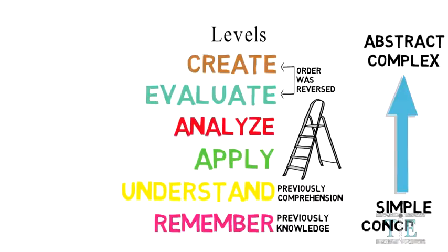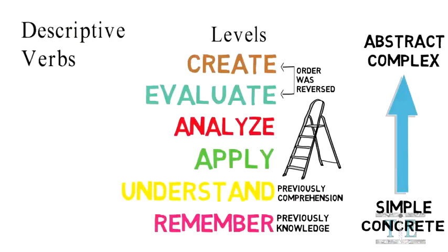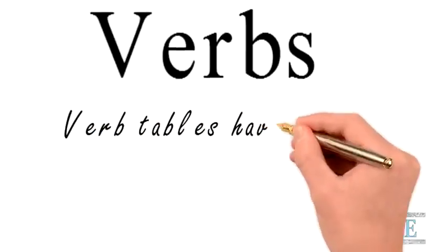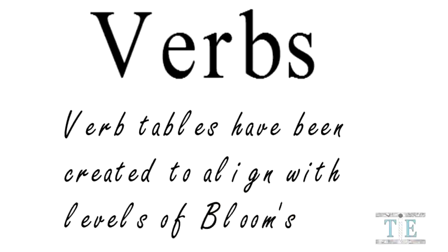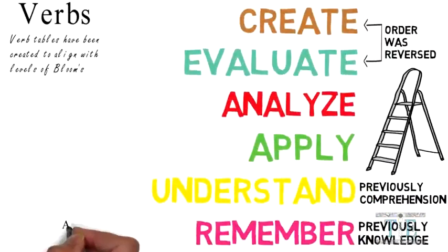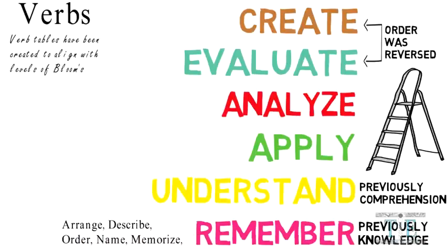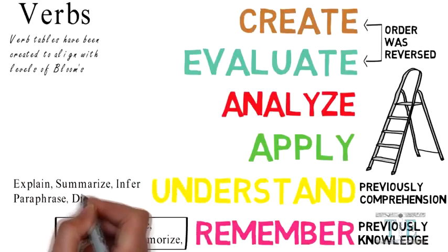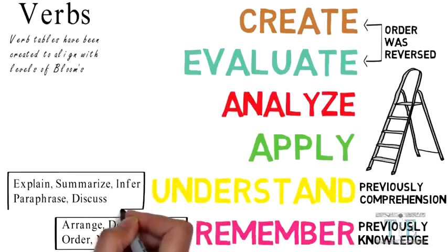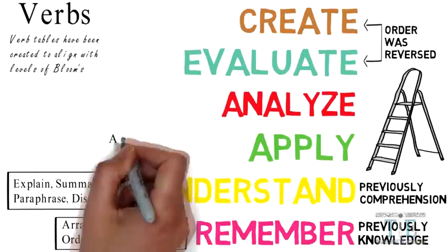The lower levels are relatively simple, while the higher levels represent more complex and abstract cognitive rigor. Descriptive verbs have been made available to help educators plan lessons. Verb tables align verbs with levels of Bloom's. Arrange, describe, order, name, and memorize are used for the 'remember' level. Explain, summarize, paraphrase, infer, and discuss are aligned with 'understanding.'